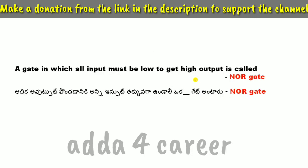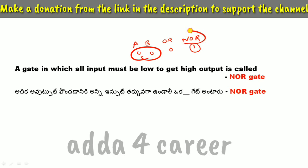A gate in which all inputs must be low to get a high output. With two inputs A and B, when both inputs are 0, 0, the output is 1. This describes the NOR gate.